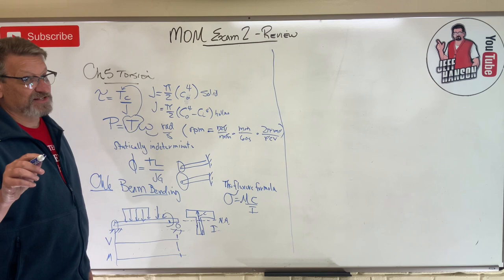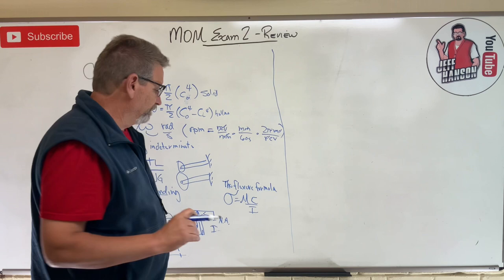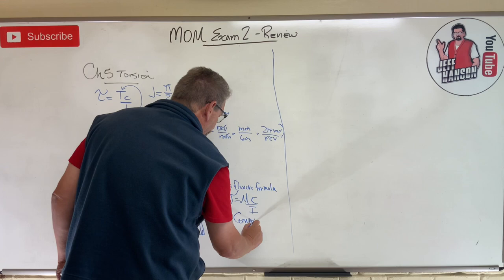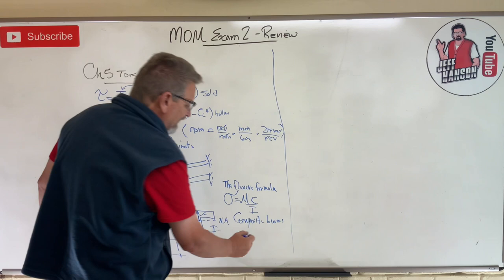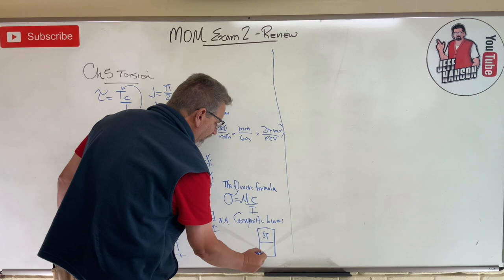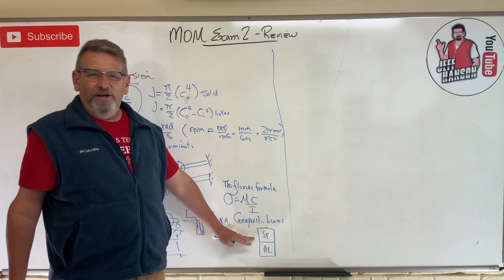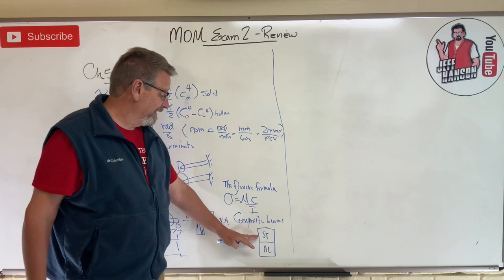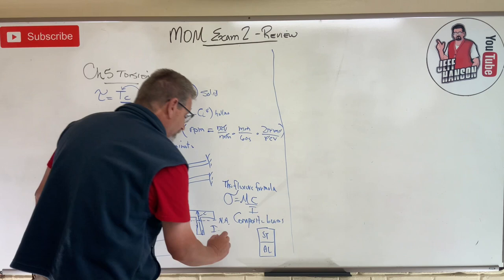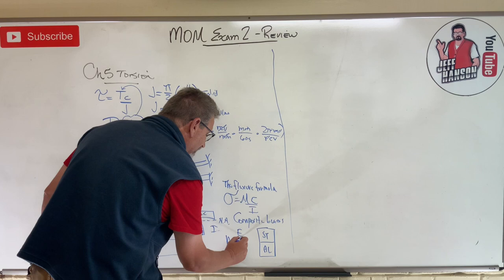Now, another thing that was in this chapter that's a little bit tricky was composite beams. Do you remember composite beams? We had like a beam that was, I think we did this one, that was steel on the top and aluminum on the bottom, and you might say to yourself, self, who's going to put an aluminum beam and a steel beam? I don't know. It could happen. We've got to convert one of those materials into the other one, and we did that by using the factor of n, which was based on the modulus of elasticity.